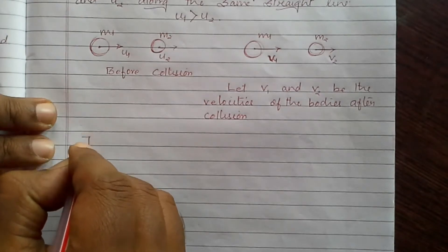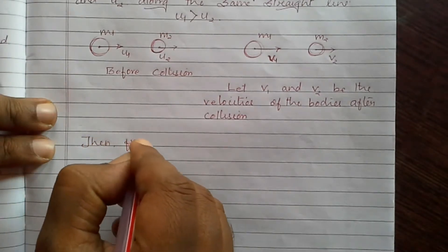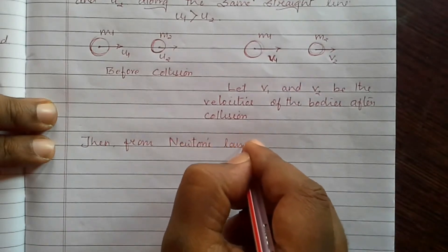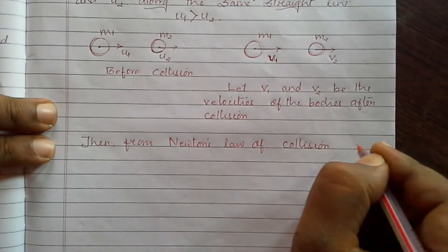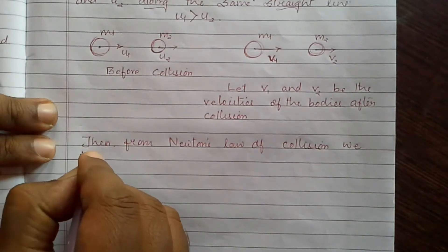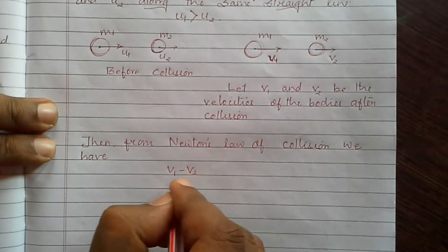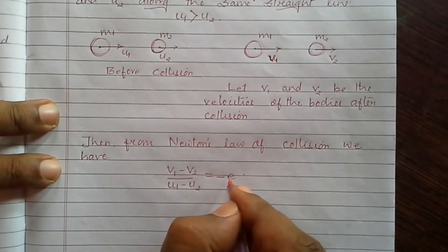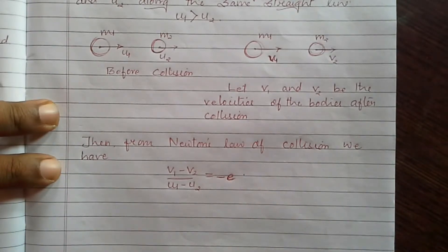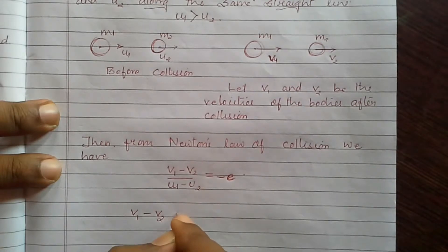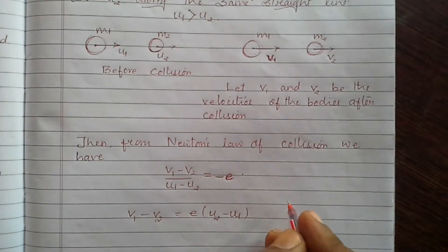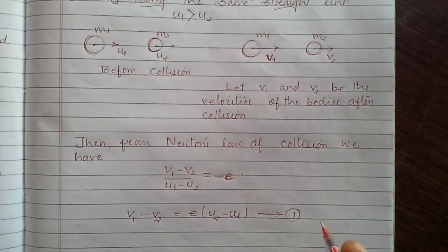From Newton's law of restitution, as discussed in the previous class, we have: V1 minus V2 divided by U1 minus U2 is equal to minus e, where e is the coefficient of restitution. We can simplify this and write V1 minus V2 is equal to e times (U2 minus U1). Let this be Equation 1.